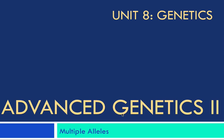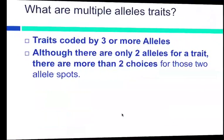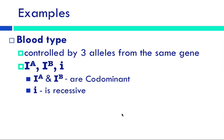So now let's move on to multiple allele traits. Multiple allele traits are exactly like they sound. They're traits that are coded by three or more alleles. So although you will only have two alleles for a certain trait, there are more than two choices for those two allele spots. And there's two examples that we're going to cover. We're going to talk about blood types first, then we'll talk about eye color here in a second.